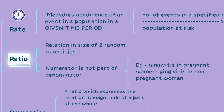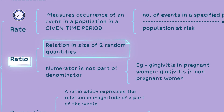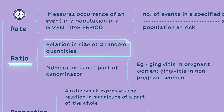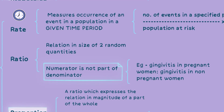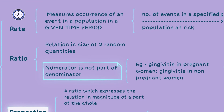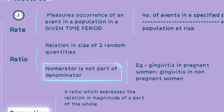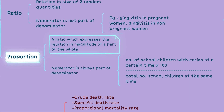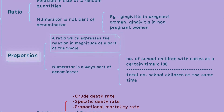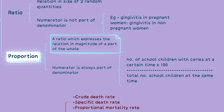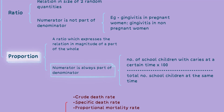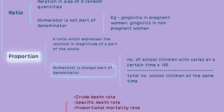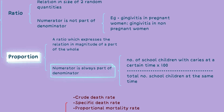A ratio represents the relationship in size between two random quantities. The numerator and denominator of a ratio are not necessarily related, and ratios are used to compare two different groups or populations. A proportion is a ratio that expresses the magnitude of a part of a whole. The numerator of a proportion is always a part of the denominator, and proportions are commonly used to express the frequency of a specific outcome or characteristic relative to the total population.